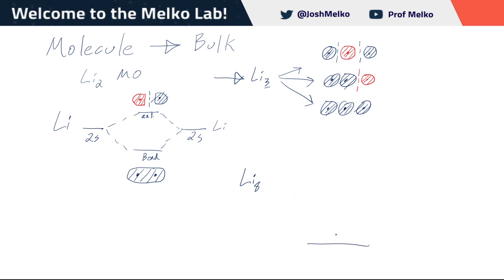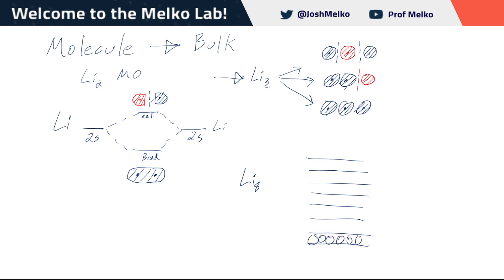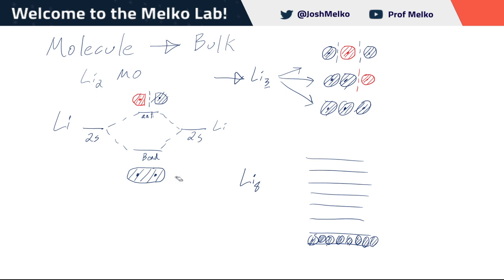We won't draw all eight, but we can note that the lowest energy one is where there are no nodes — all of these have the same sign, there's overlap between each of these atomic orbitals, and you have one big molecular orbital. The electrons are delocalized over that whole molecular orbital. Just showing the eight atomic orbitals, you get overlap creating a picture like we had in the diatomic, but for all eight overlapping.